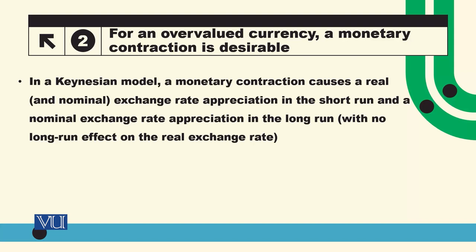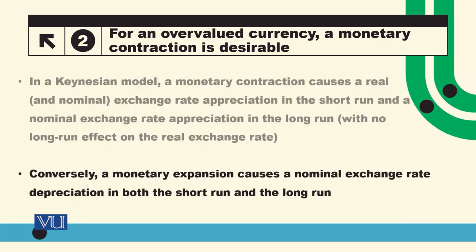In a Keynesian model, a monetary contraction causes both real and nominal exchange rate appreciation in the short run — meaning a decrease in the money supply reduces the real and nominal exchange rate in the short run, with appreciation in the nominal exchange rate in the long run but no long-run effect on the real exchange rate. Conversely, monetary expansion causes nominal exchange rate depreciation in the short run and in the long run.